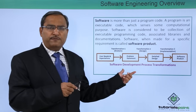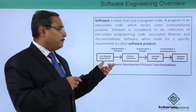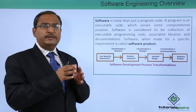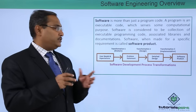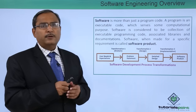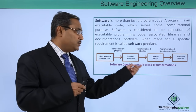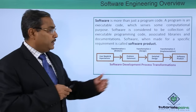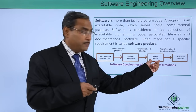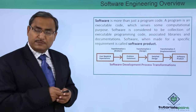Now let us consider the four phases and three transformations of the software development process. First, user needs and expectations are gathered. Then Transformation 1, known as analysis, develops the problem statement. Transformation 2, the design phase, takes the problem statement to detailed design. Transformation 3, the implementation phase, implements the design as a software product.